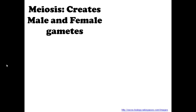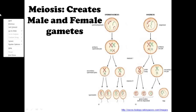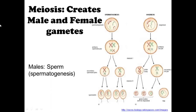Now we're going to talk about spermatogenesis. Going back to meiosis — meiosis creates male and female gametes. Male gametes are sperm, and this process in the male is called spermatogenesis because it makes sperm. In females, the equivalent process is called oogenesis, which creates eggs — we'll learn about that in another video.